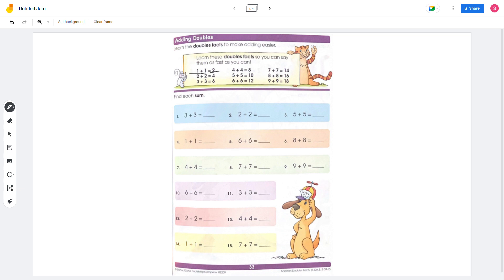1 plus 1 equals 2. 2 plus 2 equals 4. 3 plus 3 equals 6. 4 plus 4 equals 8. 5 plus 5 equals 10. 6 plus 6 equals 12. 7 plus 7 equals 14. 8 plus 8 equals 16. 9 plus 9 equals 18.